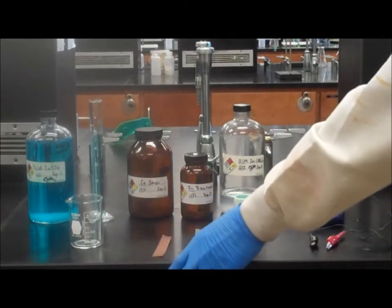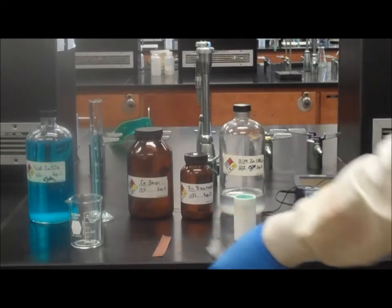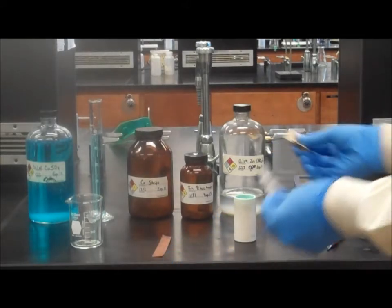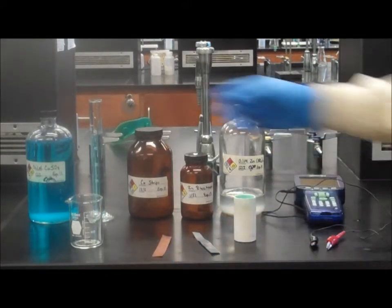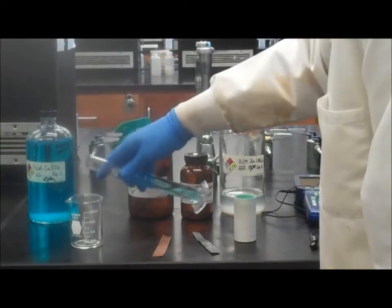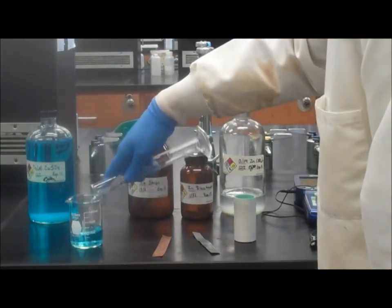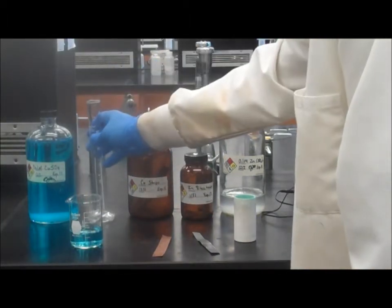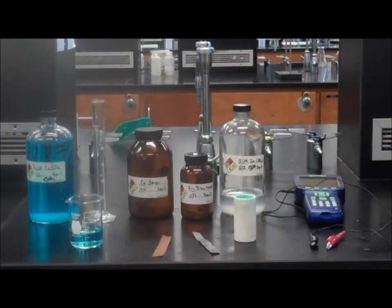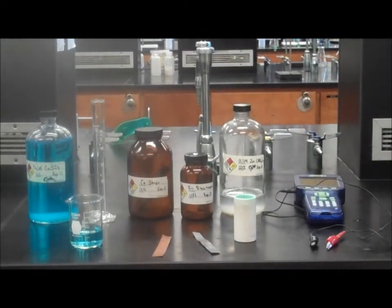Pour approximately 50 milliliters of 0.1 molar copper sulfate into a 150 milliliter beaker. Next pour 0.1 molar zinc nitrate into the porous cup until it's two-thirds full. Then place the porous cup into the CuSO4 solution.